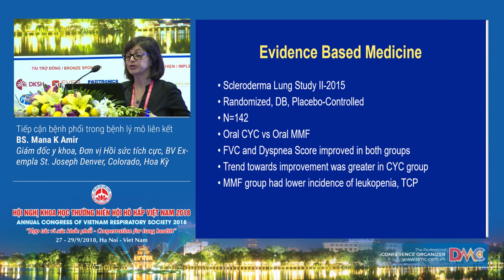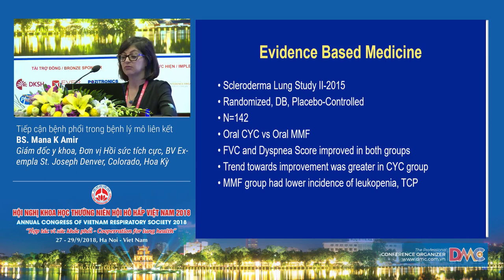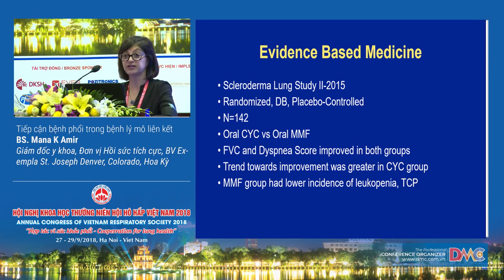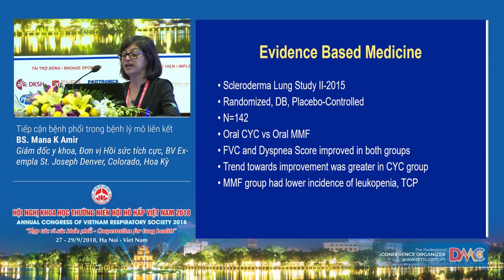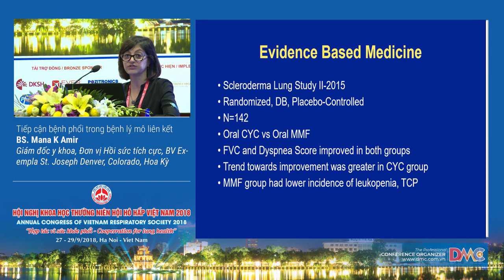The Scleroderma Lung Study 2, published in 2015, was also a randomized double-blinded placebo-controlled study of 142 patients with two arms: cyclophosphamide versus mycophenolate. Forced vital capacity and dyspnea scores improved in both groups, with a trend toward greater improvement in the cyclophosphamide group. Notably, patients who received mycophenolate had a lower incidence of complications including leukopenia and thrombocytopenia. We now have two studies showing the benefit of cyclophosphamide in scleroderma, and one indication that mycophenolate may be useful in this population.